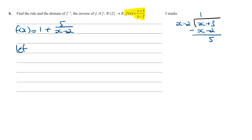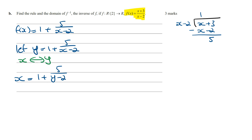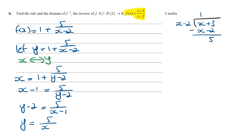We let y equal 1 plus 5 over x minus 2, then swap the x and y variables and solve for y. So x equals 1 plus 5 over y minus 2. Solving: x minus 1 equals 5 over y minus 2, then y minus 2 equals 5 over x minus 1, so y equals 5 over x minus 1 plus 2. Therefore f inverse of x has the rule 5 over x minus 1 plus 2.